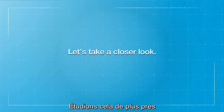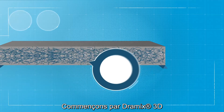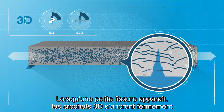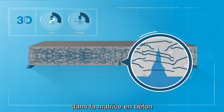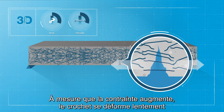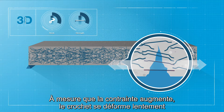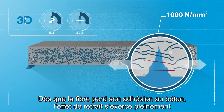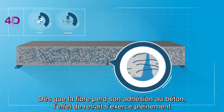Let's take a closer look. First up is Dramix 3D. When a small crack occurs, the 3D hooks firmly anchor inside the concrete matrix. As the stress increases, the hook slowly deforms. At a tensile strength of about 1,000 N per square millimeter, the fiber pulls out.